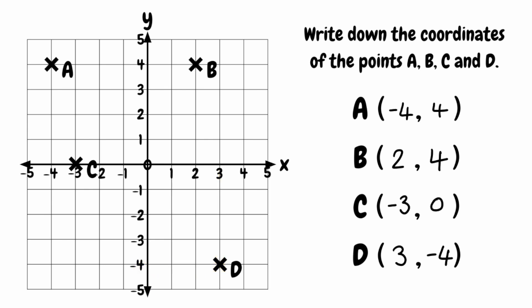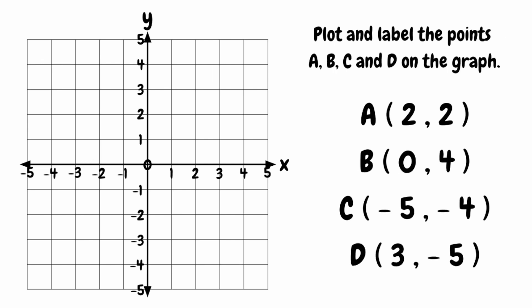Well done if you identified all of them correctly. For this last question, we want to plot and label the points A, B, C and D on the graph. To plot the first point A at 2, 2, we look at the x-coordinate, which is 2, meaning we start here on the x-axis. Then we move upwards to a y-coordinate of 2, so we'd move up to this position here, as that is in line with 2 on the y-axis. So that would be our point A.